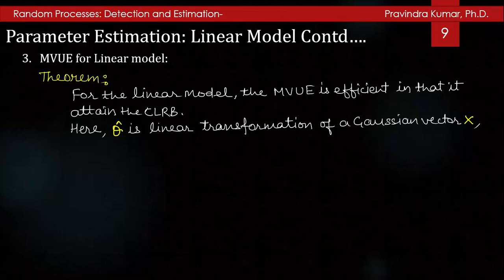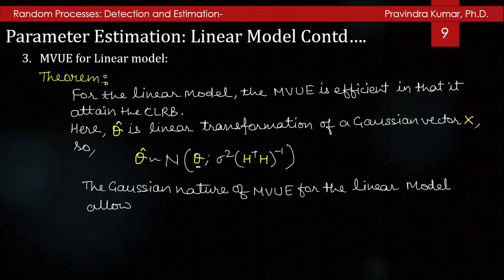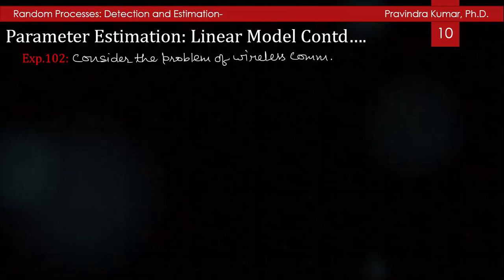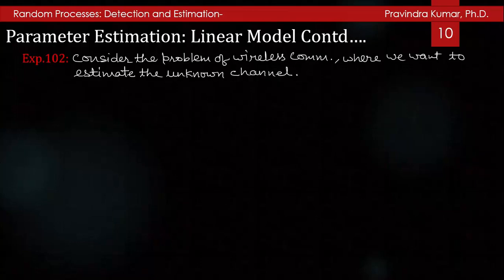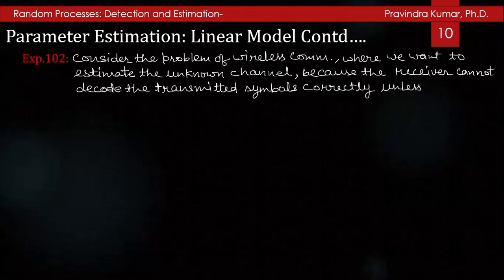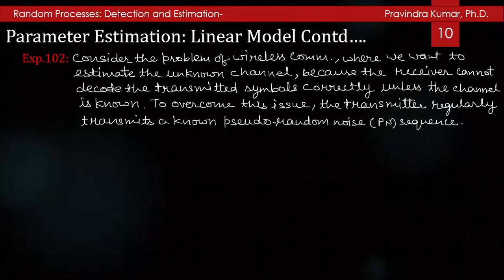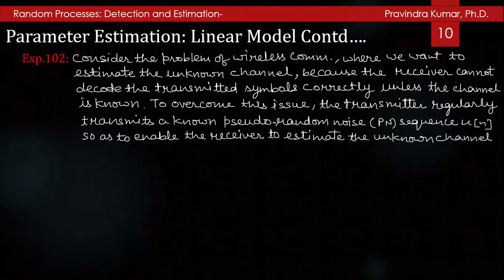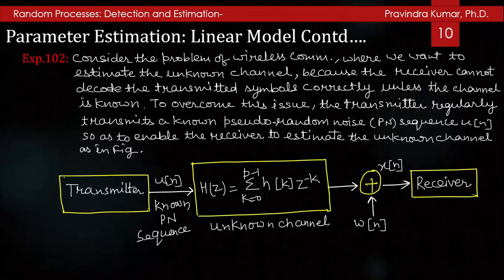Here θ̂ is a linear transformation of the Gaussian vector x. So θ̂ is a Gaussian random variable with mean θ and covariance matrix σ²(HᵀH)⁻¹. The Gaussian nature of the MVUE for the linear model allows us to determine the exact statistical performance if desired. Consider the problem of wireless communication where we want to estimate the unknown channel, because the receiver cannot decode the transmitted symbol correctly unless the channel is known.